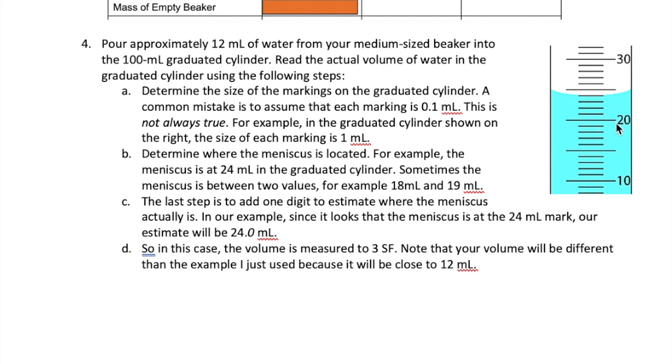Step 2 is to determine at which two marks the meniscus of the liquid is located. In the example I'm showing you here, the meniscus is exactly at the 24 milliliter mark. In some other cases, you may see that the meniscus is between two marks. So for example, it may be between 19 and 20 milliliter. Once you figure out where the meniscus is, the last step is to add one more digit to your reading of the volume. So for example, in this graduated cylinder, the meniscus is at 24 milliliters, so I will say that the volume is 24.0 milliliters. So that .0 is my estimate of the level of the meniscus. So as I said earlier, if the meniscus is between two values, let's say between 19 and 20 milliliter, you can say that the volume is 19.5 milliliter for example. So again, the .5 here is your estimate.